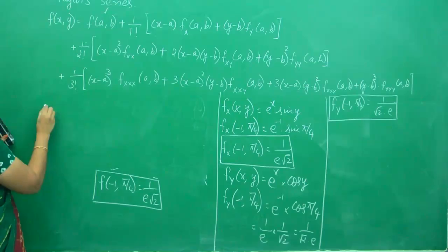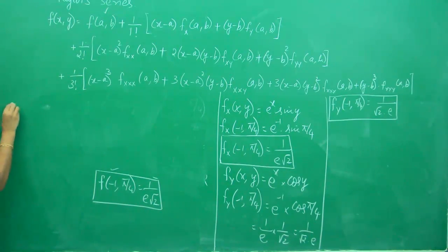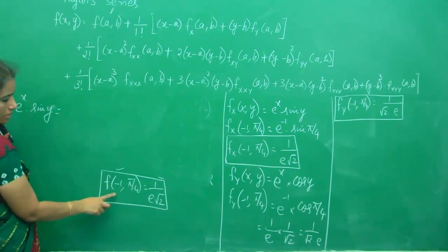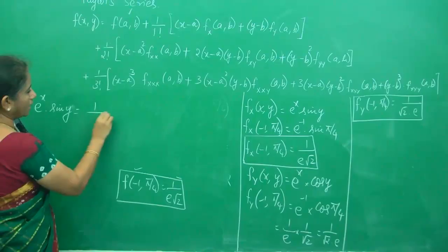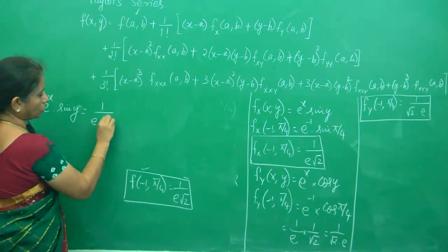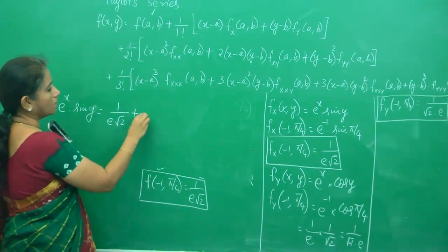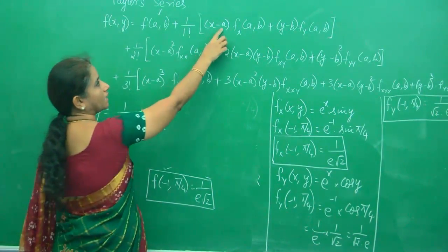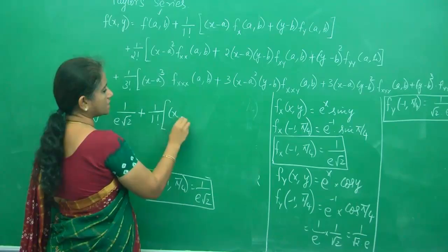So your function e^x sin y equals f(a,b) plus (1/1!) (x - a) f_x(a,b) plus... What is f(a,b)? 1/(e√2). x stays as it is, remember.